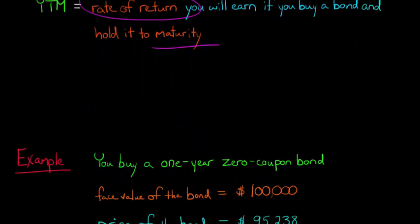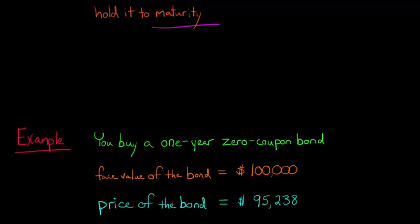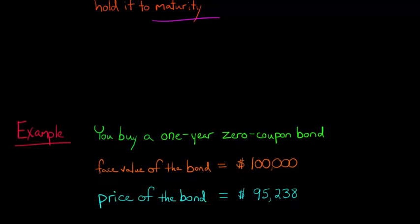For example, and now we're of course talking about zero-coupon bonds in this example, let's say that you bought a bond for $95,238 and the face value of the bond was $100,000.